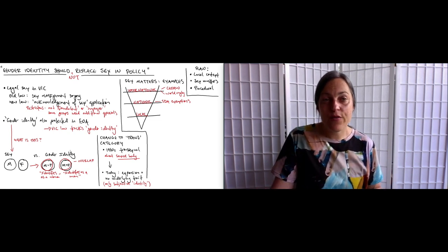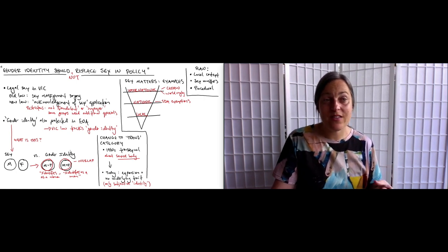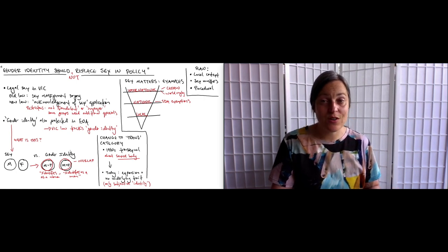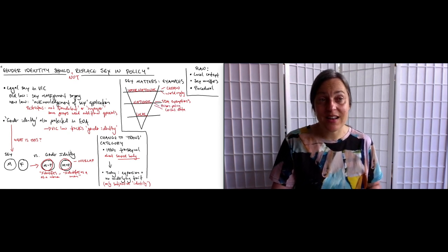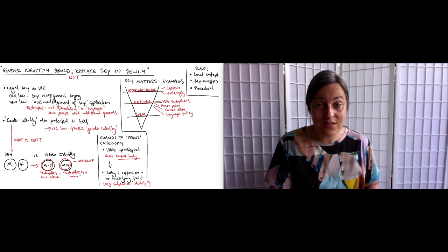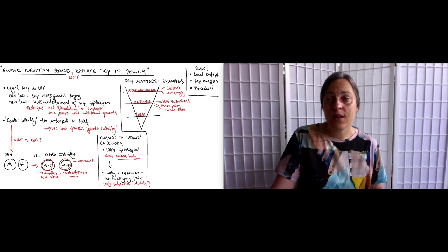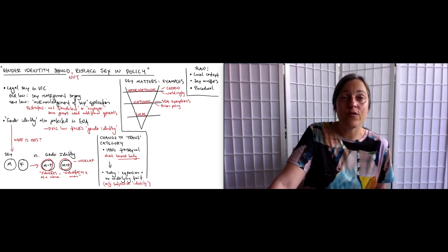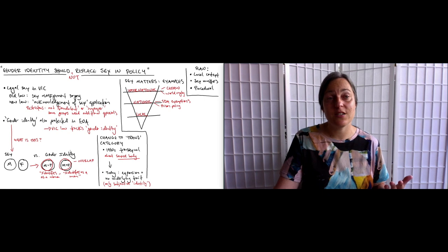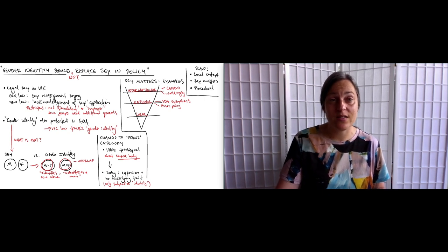There are a few other examples at the national level that I don't have time to say as much about, but I at least wanted to mention. These are prison policy, census data, and the language used by women's organisations. So prison estates are sex segregated, and this protects an important range of interests that women have, for example, and makes them less likely to be subject to rape and sexual assault.